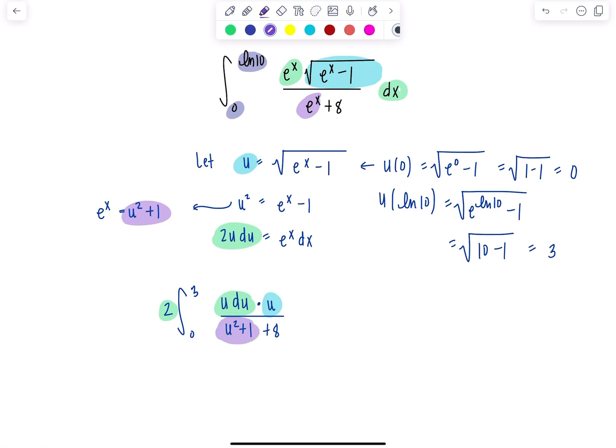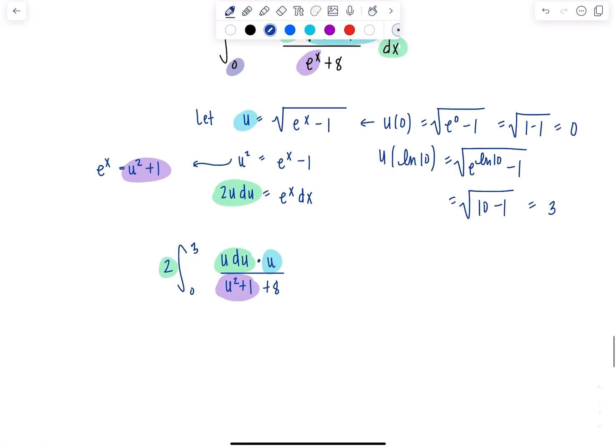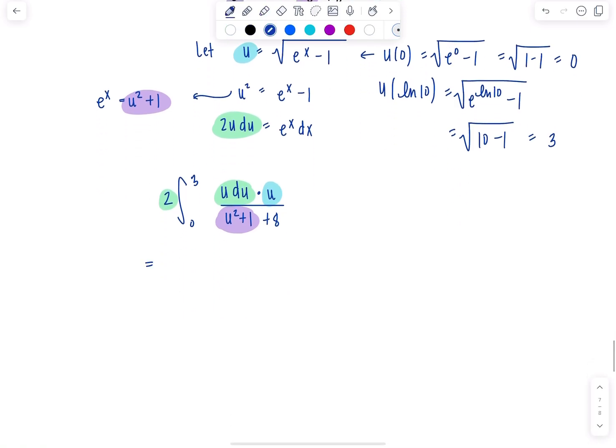Take a second. Stare at it. Make sure you feel somewhat under control. Let's clean up further now and see how we're going to tackle this. So we have 2 integrals. 0 to 3 u squared du over u squared plus 9.